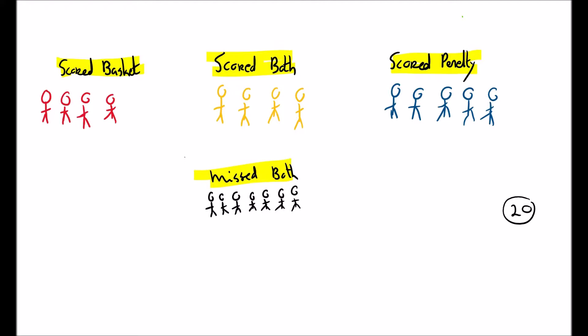In looking to see if the basketball and the penalty shots are independent or dependent, we have to ask ourselves: if I look for the probability of a student scoring a penalty choosing from the whole group, and then if I just take the students who scored the basket and pick from those, would the probability of getting a student who scored a penalty be the same? So let's look at students who scored a penalty. If I chose from this group of 20, there are 9 students who scored a penalty, so the probability of scoring the penalty equals 9 out of 20.